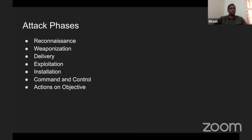Let's take the example of any bank — it's one of the treasured resources that someone would have the intention to attack because of the money. So if someone wants to attack any bank or financial institution, what would be the planning phases? There are certain phases: first is reconnaissance, second is weaponization, then delivery, exploitation, installation, command and control, and actions on objectives.